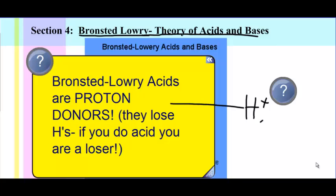The way that I remember that acids are donors is that if you do acid, you're a loser. So acids lose hydrogen ions. The Bronsted-Lowry definition of an acid is not really any different than the Arrhenius definition of an acid. Arrhenius is someone that donates hydrogen ions. Bronsted-Lowry is someone that donates protons. But a proton and a hydrogen ion are the same thing. Anything that's an Arrhenius acid is also a Bronsted-Lowry acid.